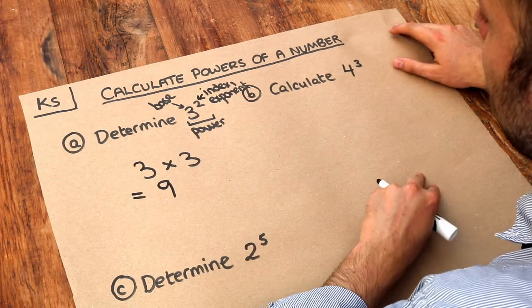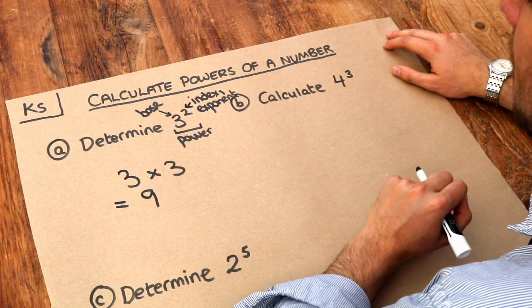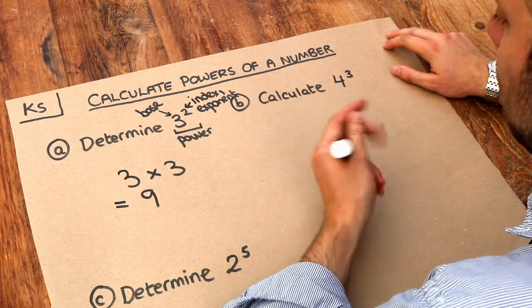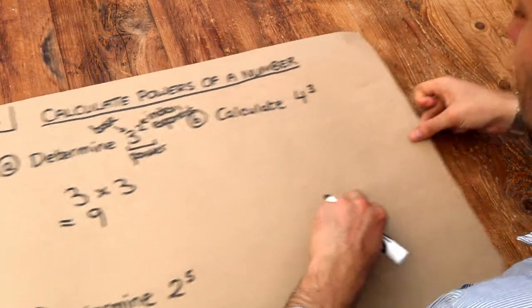A lot of students incorrectly think that this just means 3 times 2, which would be 6. But if I wanted 3 times 2, I would write 3 times 2. Let's do some more examples.